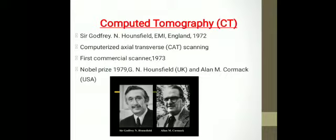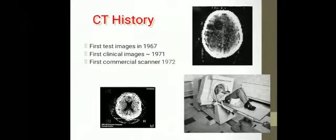Coming to Computed Tomography, a brief history about CT. It was Godfrey Hounsfield from England in 1972 who first discovered CT. CT is also called as CAT, which is Computerized Axial Transverse Scanning. The first commercial scanner was launched in 1973, for which the Nobel Prize was shared by Hounsfield from UK and Alan M. Cormack from USA in the year 1979. The first test images in CT were performed in 1967, clinical images in 1971, and the first commercial scanner came into use in 1972. Here you can see images from the old scanners and on the right hand side one such old CT scanner.